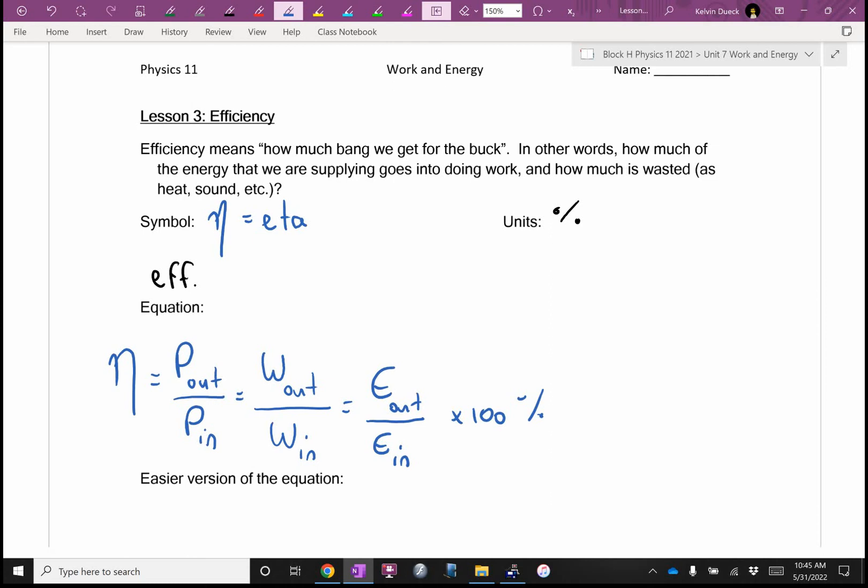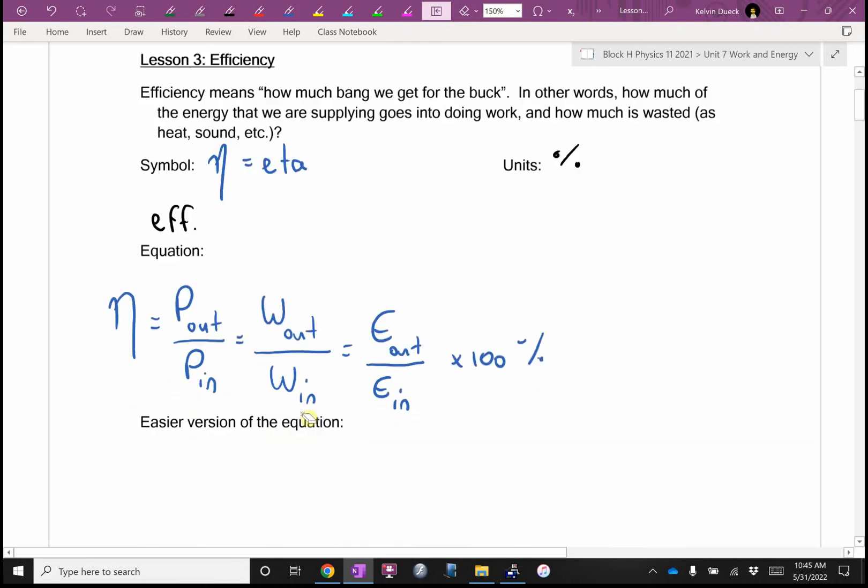There's a problem with that. When we get to electricity next year in Physics 12, the power in comes from an outlet, and it's very easy to get the in and out mixed up. In fact, I know there's a question that I do in Physics 12, where I'll often have somebody tell me a light bulb is 140% efficient. And I say, no, that violates the laws of the universe.